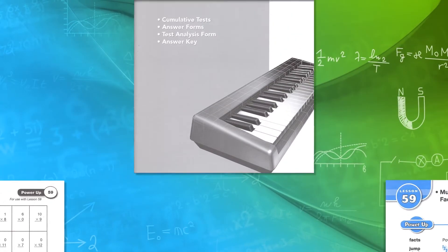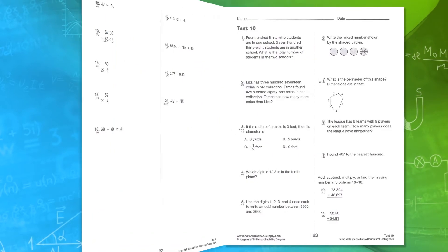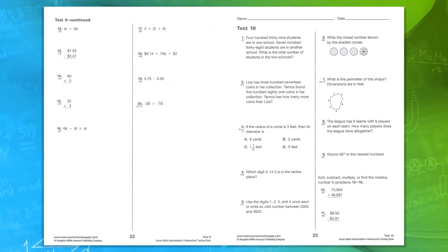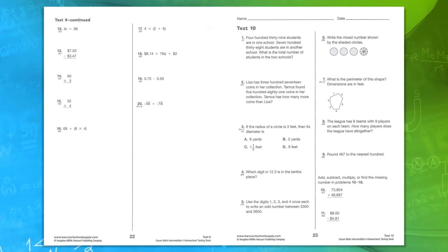Tests, just like in the Saxon homeschool edition, start at lesson 10 and then every fifth lesson afterwards. Students get to take their test right on the provided pages — they don't have to do it on their own paper.